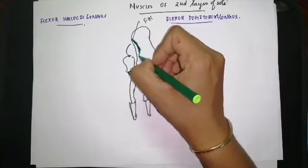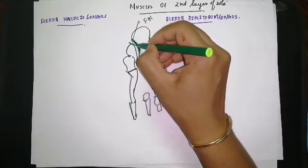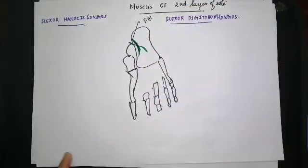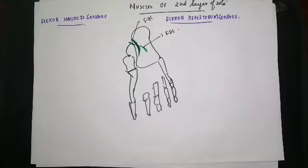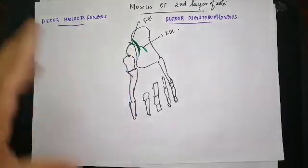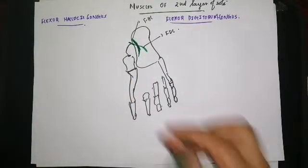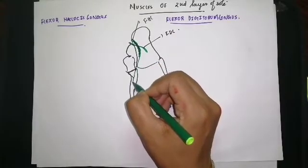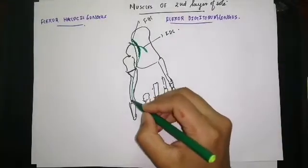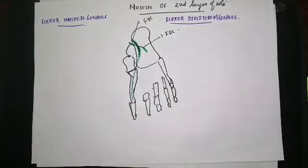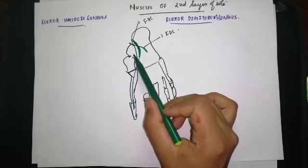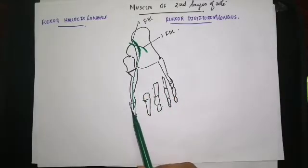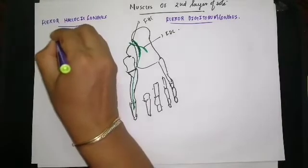We have the tendon of the flexor hallucis longus and the tendon of the flexor digitorum longus. Although the flexor hallucis longus originates from the fibula and the flexor digitorum longus originates from the tibia, these two tendons cross each other in the second layer of the sole. The tendon of the flexor hallucis longus passes downwards and gets inserted into the plantar surface of the base of the distal phalanx of the great toe.